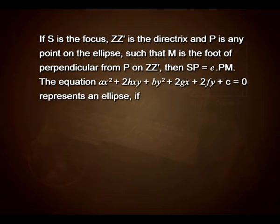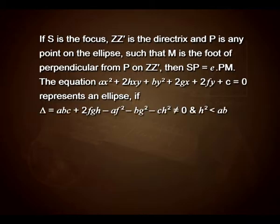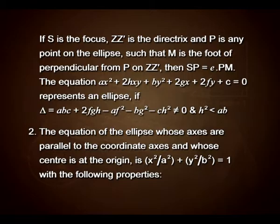The equation ax² plus 2hxy plus by² plus 2gx plus 2fy plus c equals 0 represents an ellipse if the determinant equals abc plus 2fgh minus af² minus bg² minus ch² is not equal to 0 and h² is less than ab. The equation of the ellipse whose axes are parallel to the coordinate axes and center at the origin is x² upon a² plus y² upon b² equals 1, where a is greater than b.